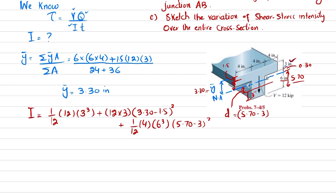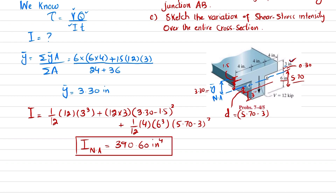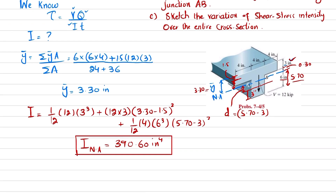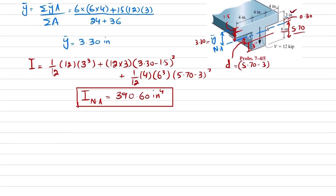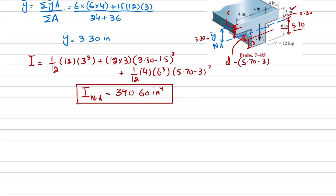When you solve it, the moment of inertia about the neutral axis comes out to be 390.60 in⁴. Now we have the moment of inertia and V, so we will calculate Q_max since we are finding the maximum shear stress.